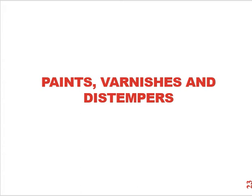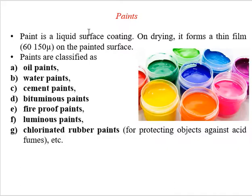In this tutorial video we are going to cover paints, varnishes, and distemper. These are construction materials we see in day-to-day life at a construction site or during renovation work in our rooms and buildings, where workers use paints, varnishes, and distemper to improve the appearance of buildings and furniture.